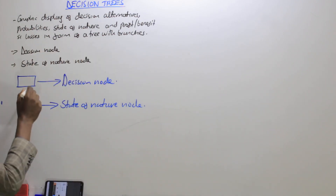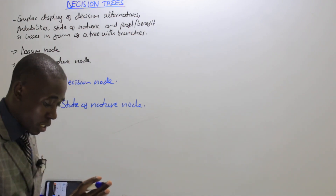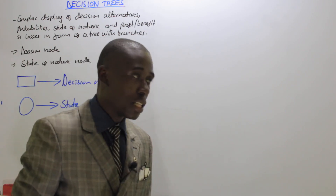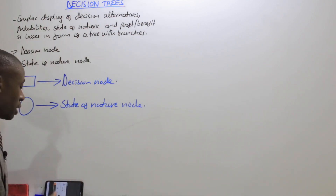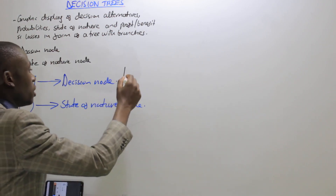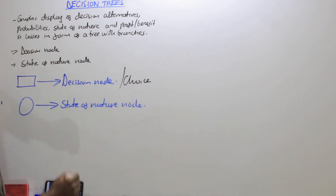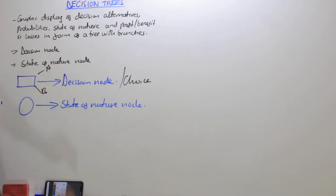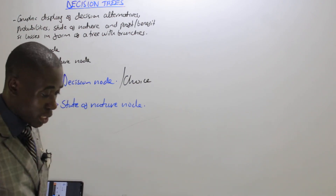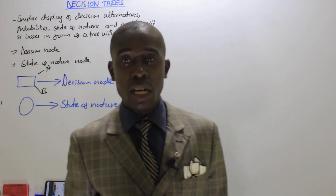Why is it called a decision node? Because it is at this point where the decision maker has a choice to make. At this node, the decision maker has a choice — meaning this person can either select option A or option B. He has a choice to select among the alternatives that he or she will be having.